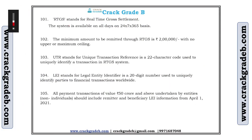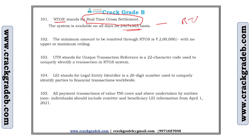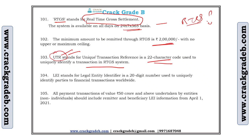RTGS stands for Real-Time Gross Settlement. It is available all days and the minimum amount to be remitted in RTGS is 2 lakh with no upper ceiling. UTR stands for Unique Transaction Reference — a 22-character code used to uniquely identify a transaction in the RTGS system. This is valid for IMPS and NEFT as well.